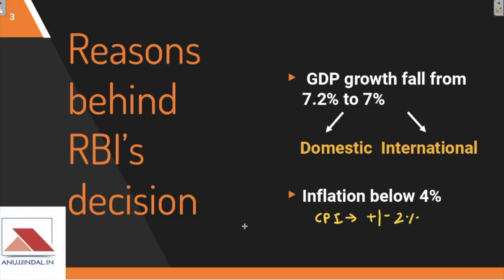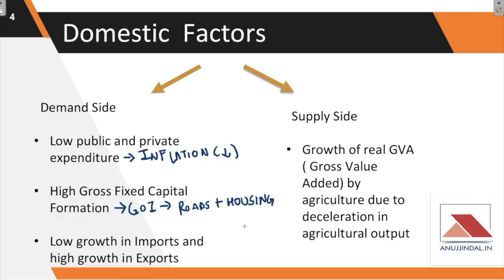Now, the reasons behind RBI's decision. First, GDP growth fell from 7.2 percent to 7 percent — the gross domestic product was declining. Second, inflation was below 4 percent, within the expected target, giving authorities a good buffer to work with. These two factors created the conditions under which a rate cut was justified.